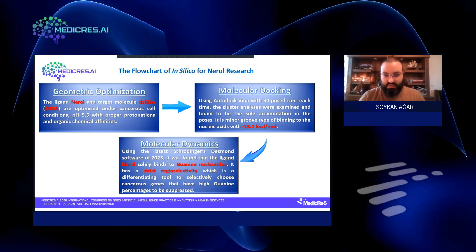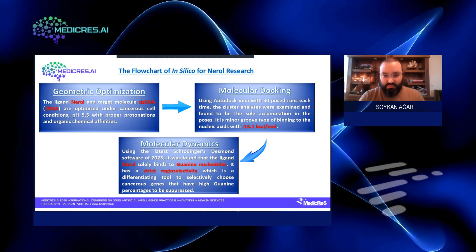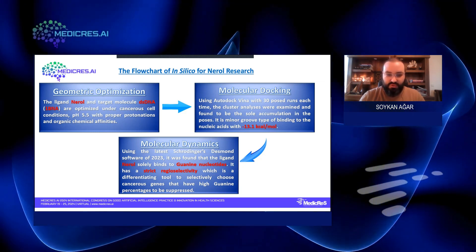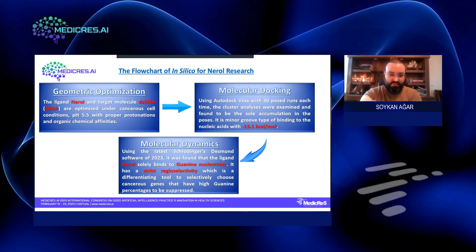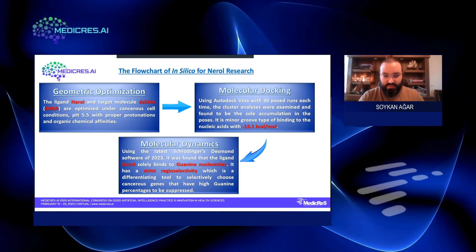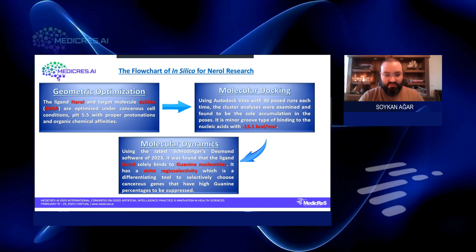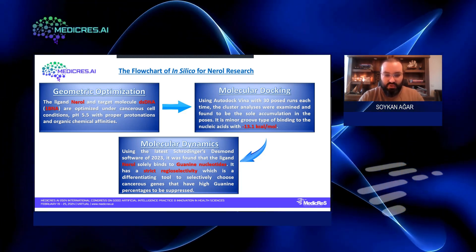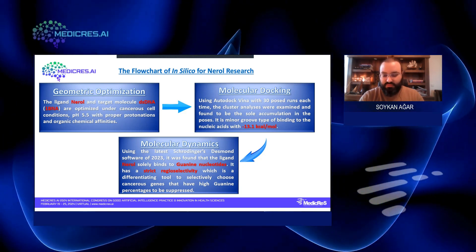The study was then followed with molecular dynamics using the latest Schrodinger's Maestro Desmond software of 2023. It was found that the ligand Nerol solely binds to guanine nucleotides of DNA. It has a strict regioselectivity, which is a differentiating tool to selectively choose cancerous genes that have high guanine percentages to be suppressed.